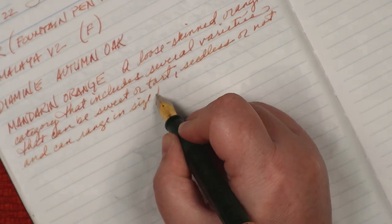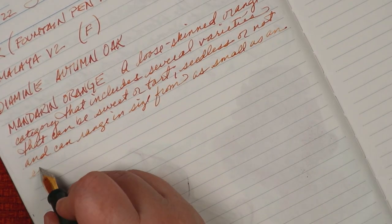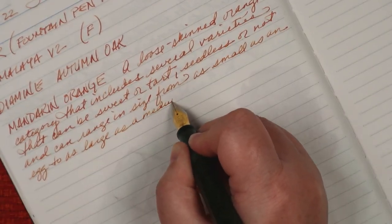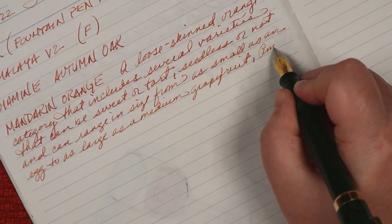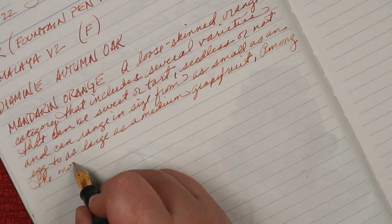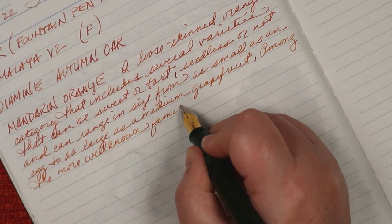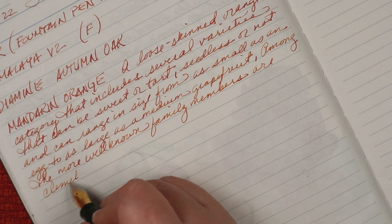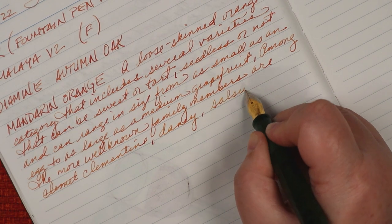The filling process went fine. It's just a regular twist-action piston converter. What I do is fill it with a syringe, then give the knob a few twists to push the ink through the feed. That's become my usual process, and it usually works fine. But with this pen, the ink wasn't reaching the tip of the nib, and I realized it was coming out of the breather hole instead.